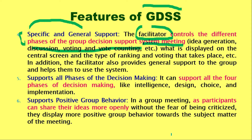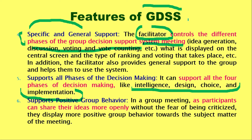Point five is that GDSS supports all phases of decision making. As we covered in a previous section, there are four phases in decision making: intelligence, design, choice, and implementation. GDSS helps in all four phases — gathering information using intelligence, designing various solutions, choosing the best option, and implementing the best solution.